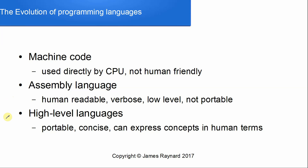Still in the 1950s, someone took this a step further and wrote another program called a compiler. You could enter words into it, it would generate assembly language, then you could feed that into your assembler to generate machine code and run your program. This is portable because you can configure your compiler to generate the appropriate type of assembly language for the computer you're working on. It's also concise — a single instruction in a high-level language can correspond to several assembly language instructions. For example, you can just say 'open file' and that'll generate all the necessary assembly instructions. It also gets closer to thinking in terms of human concepts, like opening files or reading in data, as opposed to just poking around in memory.